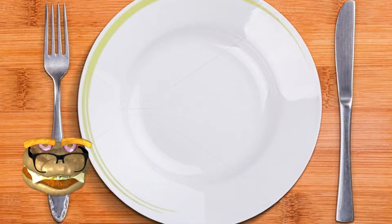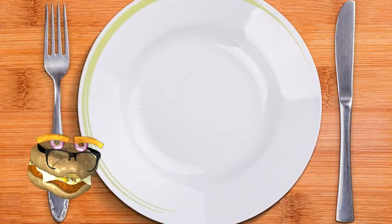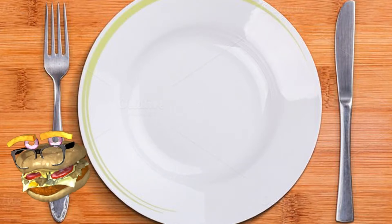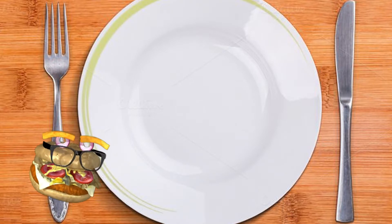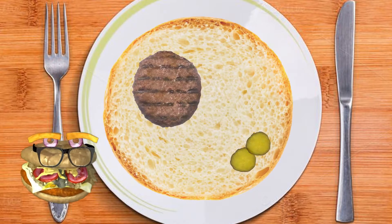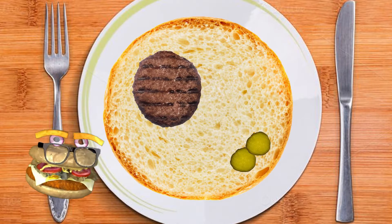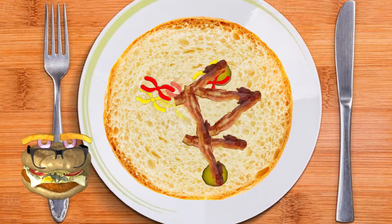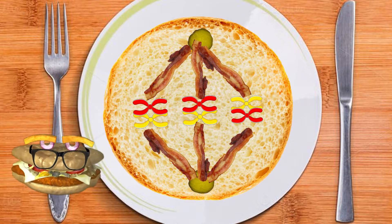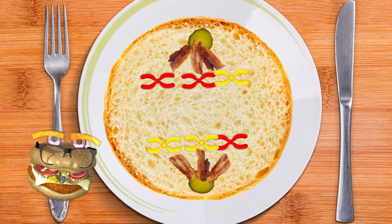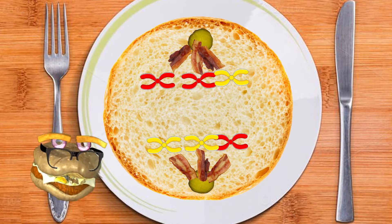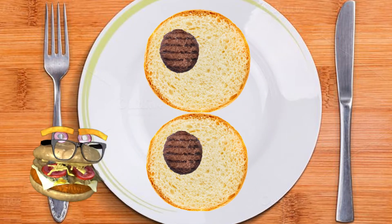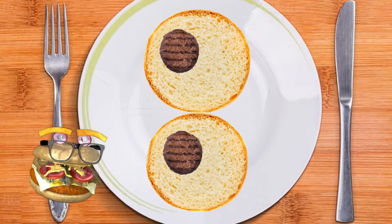Meiosis is split into two steps: meiosis 1 and meiosis 2. They each also follow the steps of prophase, metaphase, anaphase, and telophase. First, we start with the diploid somatic body cell. In prophase, the cell gets ready for division. In metaphase, all the chromosomes line up. In anaphase, the sister chromatids are pulled to the poles. And in telophase and cytokinesis, the cell divides into two cells, each with a pair of haploid sister cells.